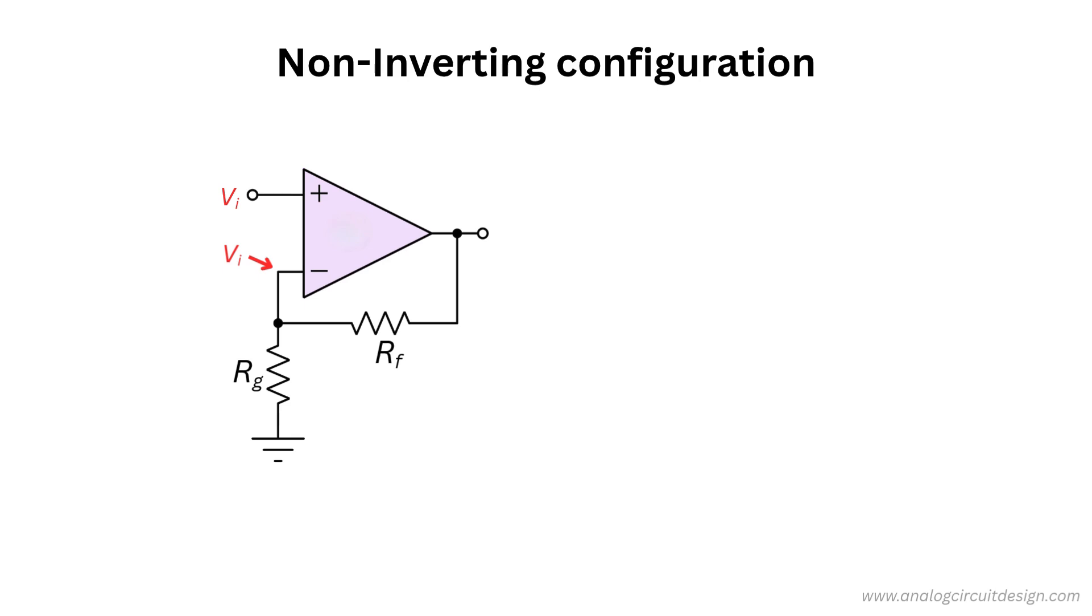The current flowing through RG would be VI by RG. Since no current flows into or out of the input terminals of the op-amp, the current flowing through RG has to come through RF. Using KVL, we can write the expression of the output voltage VO.